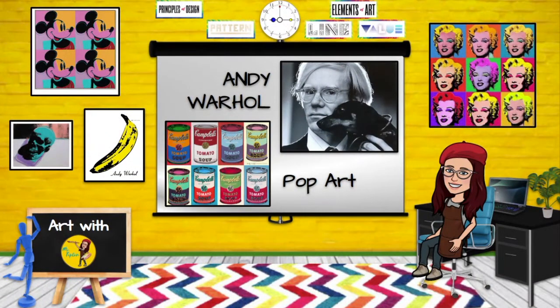Andy Warhol was born in 1928 and grew up in Pittsburgh, Pennsylvania. He was eight years old when he became ill with a disease that caused his limbs to occasionally spasm uncontrollably. As he recovered his mother who was an artist taught him to draw. He was shy but loved drawing and photography.